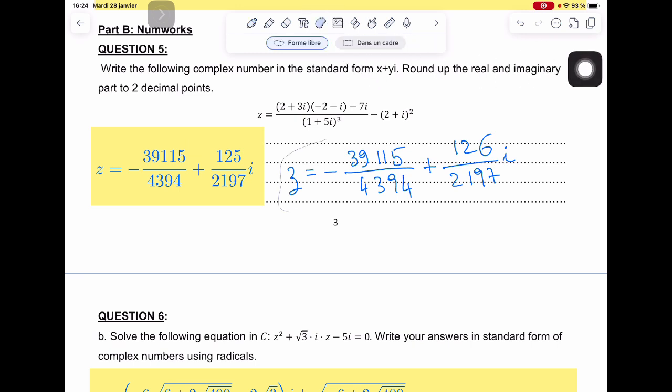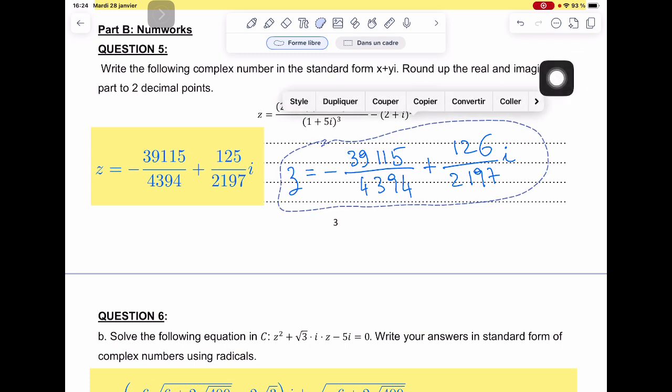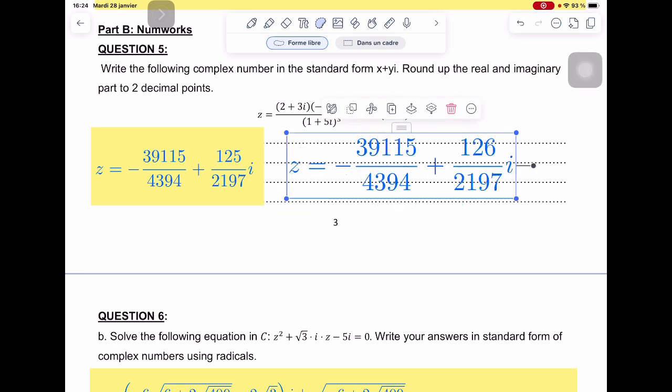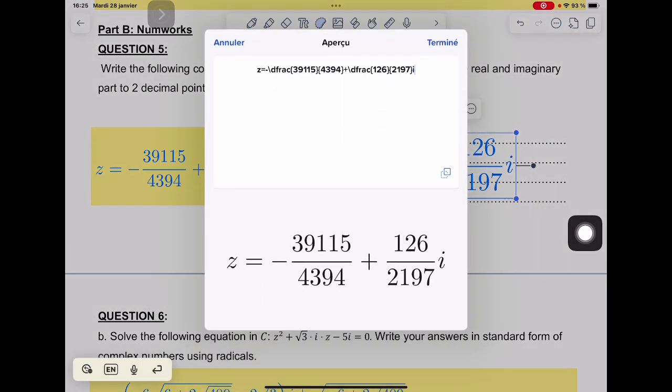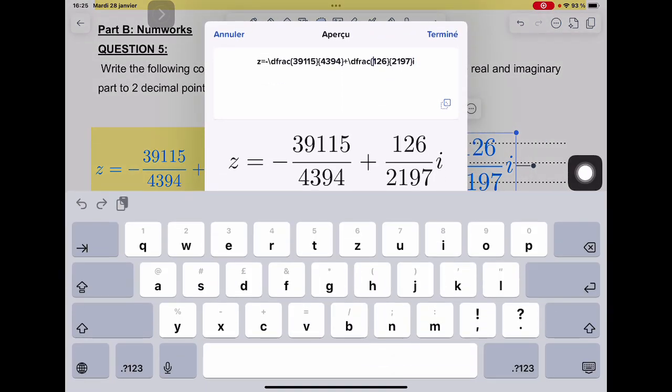And then with the lasso again, select, tap once, convert into math and here we are again. Or three dots, modify or edit and change with my keyboard or my fingers the writing I need.